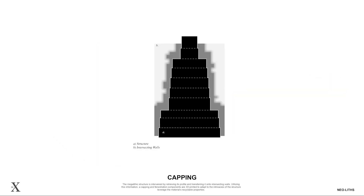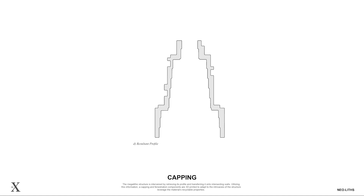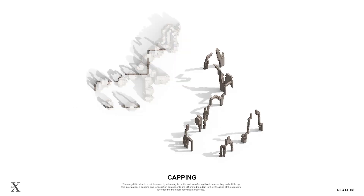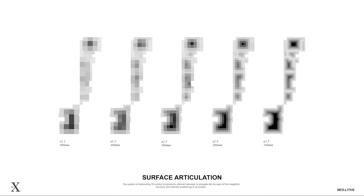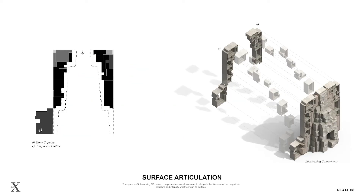The profile of the structure is transferred to the intersecting walls. A capping layer is 3D printed to adapt to the intricacies of the structure. A system of interlocking 3D printed components channels rainwater around the megalithic structure, to elongate its lifespan and intensify weathering on its surface. The resolution of the texture is calibrated to create an intermittent flow of rainwater, promoting organic growth on its surface.